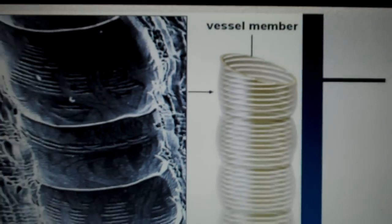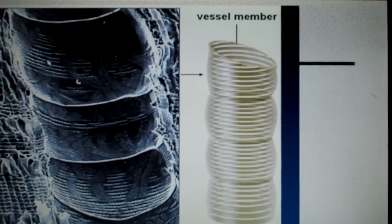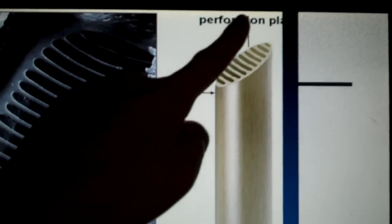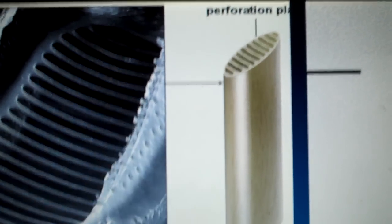Here are the pits in the tracheids, and here is a vessel member. It's shorter, wider, and the walls are thinner. There's the perforations at the tip of the vessel elements that the water can pass through.